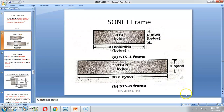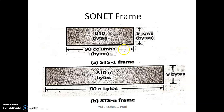We can see what is SONET — it is Synchronous Optical Network. The SONET frame consists of 9 rows and 90 columns, giving us 810 bytes.